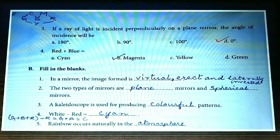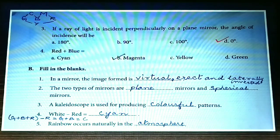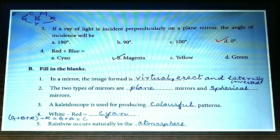Fill in the blanks: in a mirror the image formed is virtual, erect, and laterally inverted. The two types of mirrors are plane mirrors and spherical mirrors. A kaleidoscope is used for producing colorful patterns. In olden days, when computers were not much in use, this instrument was used to create colorful patterns to be printed on saris and other dress materials.